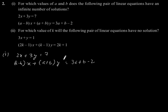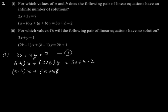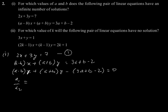Let's say this is equation 1. By shifting this part to the left hand side, we will get (A minus B) into x plus (A plus B) into y minus (3A plus B minus 2) is equal to 0. Let's say this is equation 2.